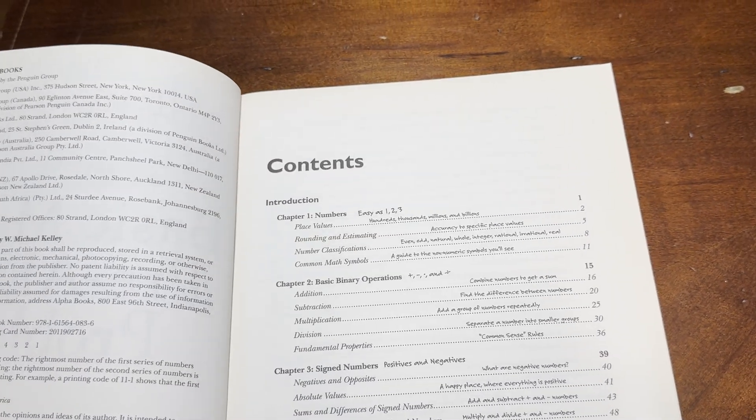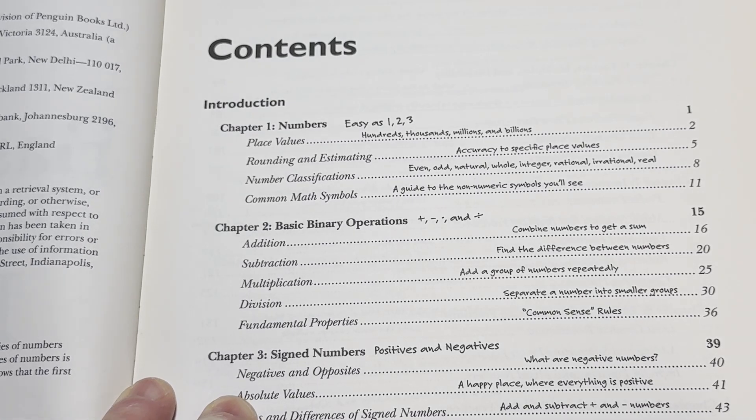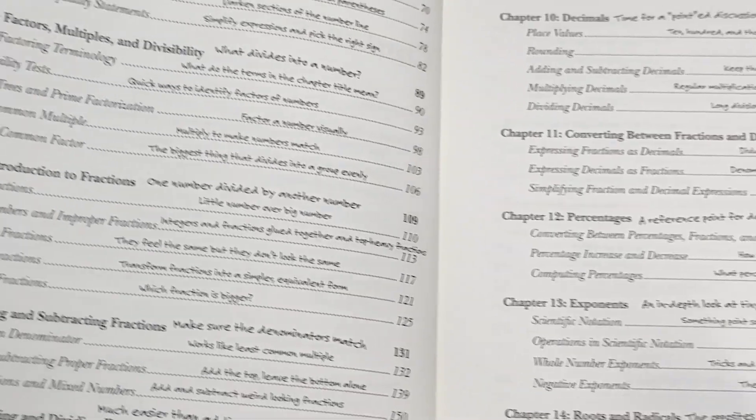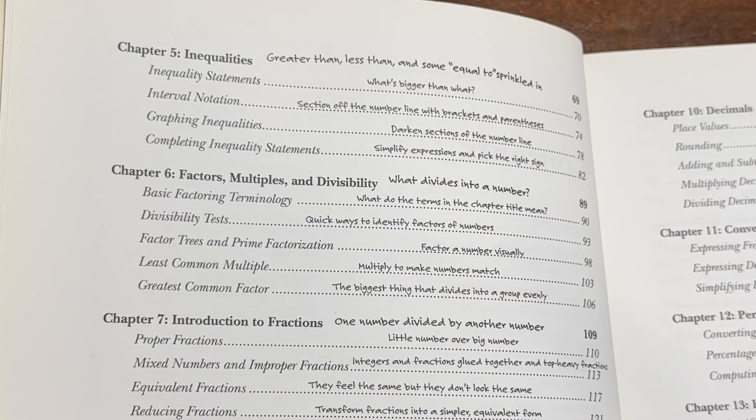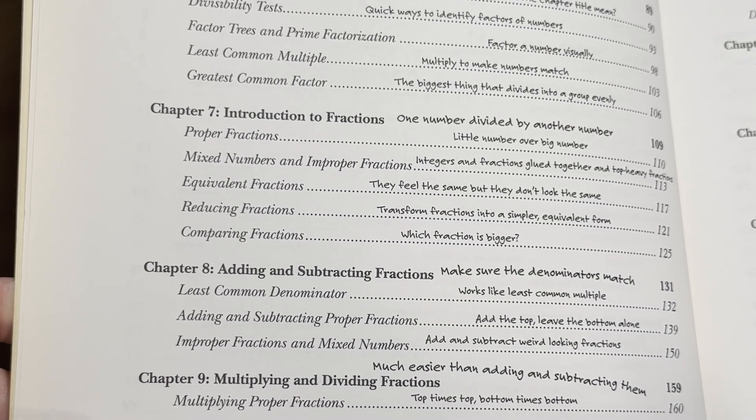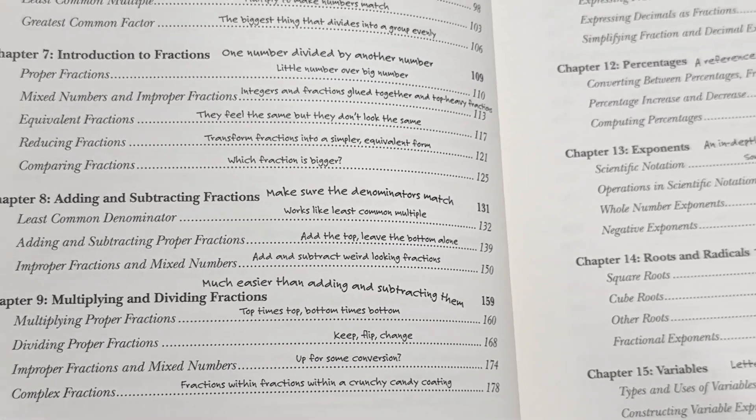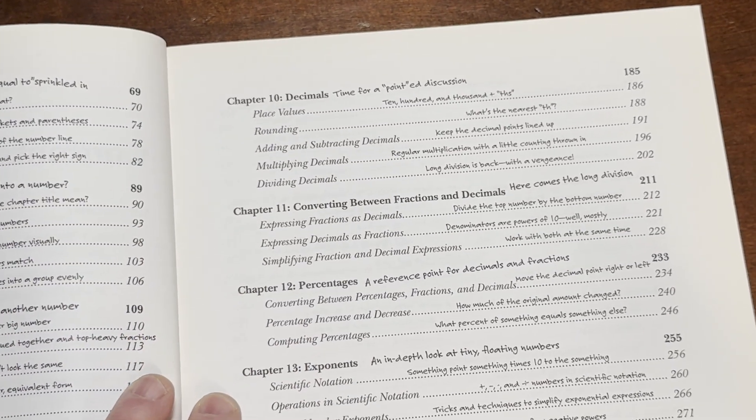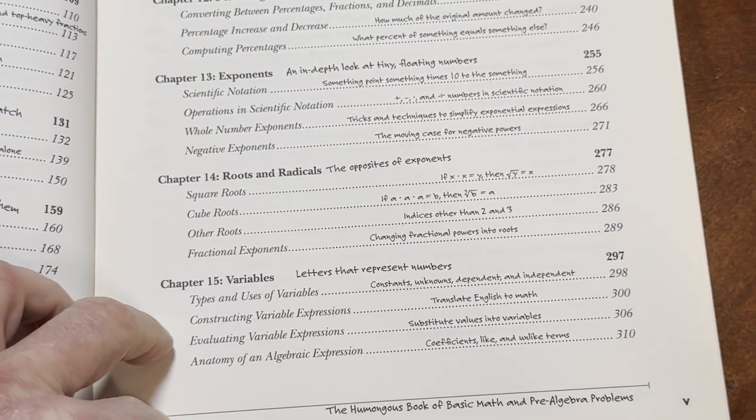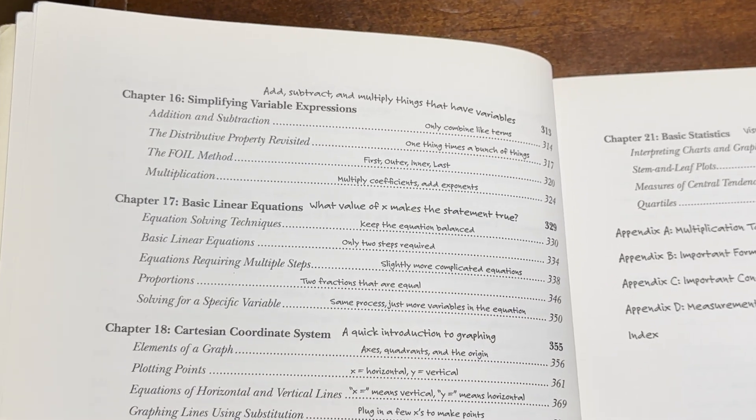Okay, here are the contents, so you can see numbers, really basic binary operations, sign numbers, order of operations, inequalities, factors, multiples and divisibility, introduction to fractions, adding and subtracting fractions, multiplying and dividing fractions. It's really basic math, and it's good to have books like this. Look at all these topics, because there's not that many with this type of layout and this type of clarity.